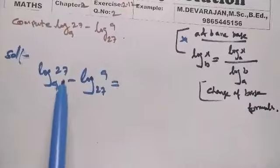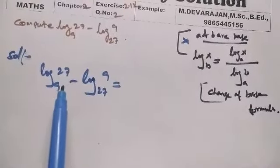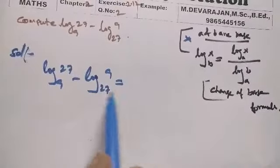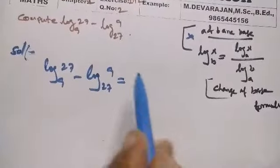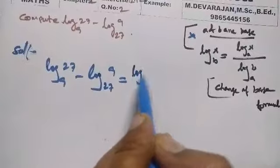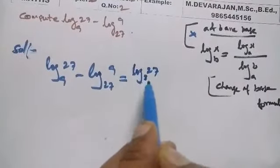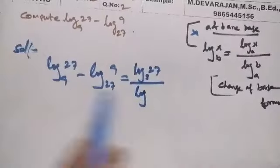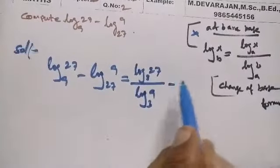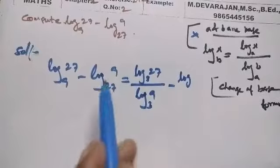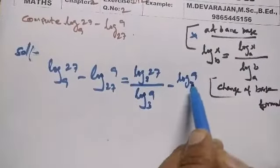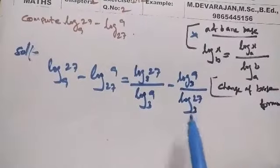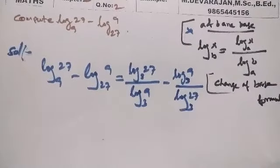We'll apply it. For 9 and 27, the common base is 3, so I will change to base 3. This gives us log 27 to the base 3 divided by log 9 to the base 3, minus log 9 to the base 3 divided by log 27 to the base 3.